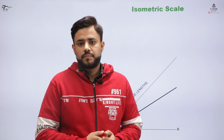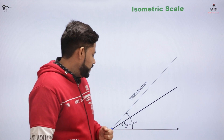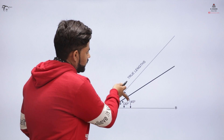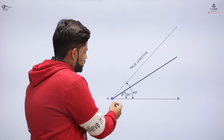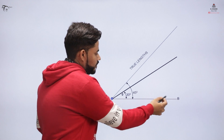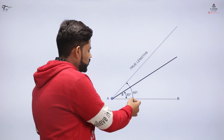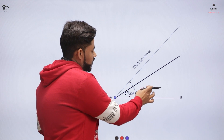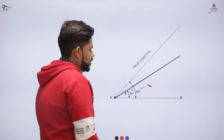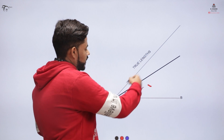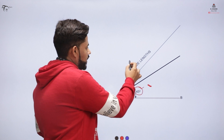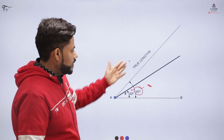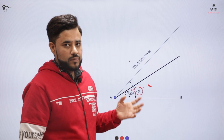In this video, we will be learning that concept. Initially, we can have the length of the line as AB — we can draw AB of any length. And from there, we can draw two lines: one inclined at an angle of 45 degrees and second at an angle of 30 degrees. The line having an inclination of 45 degrees is the true length, and we want to convert this true length into the isometric part or the isometric length.